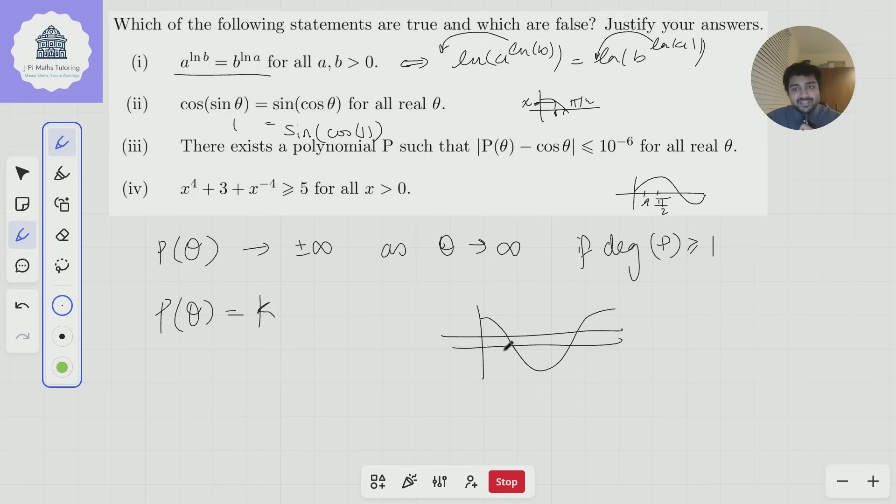yeah, maybe this will be within 10^(-6) for certain values of θ, maybe these θ values just to the sides of this point.